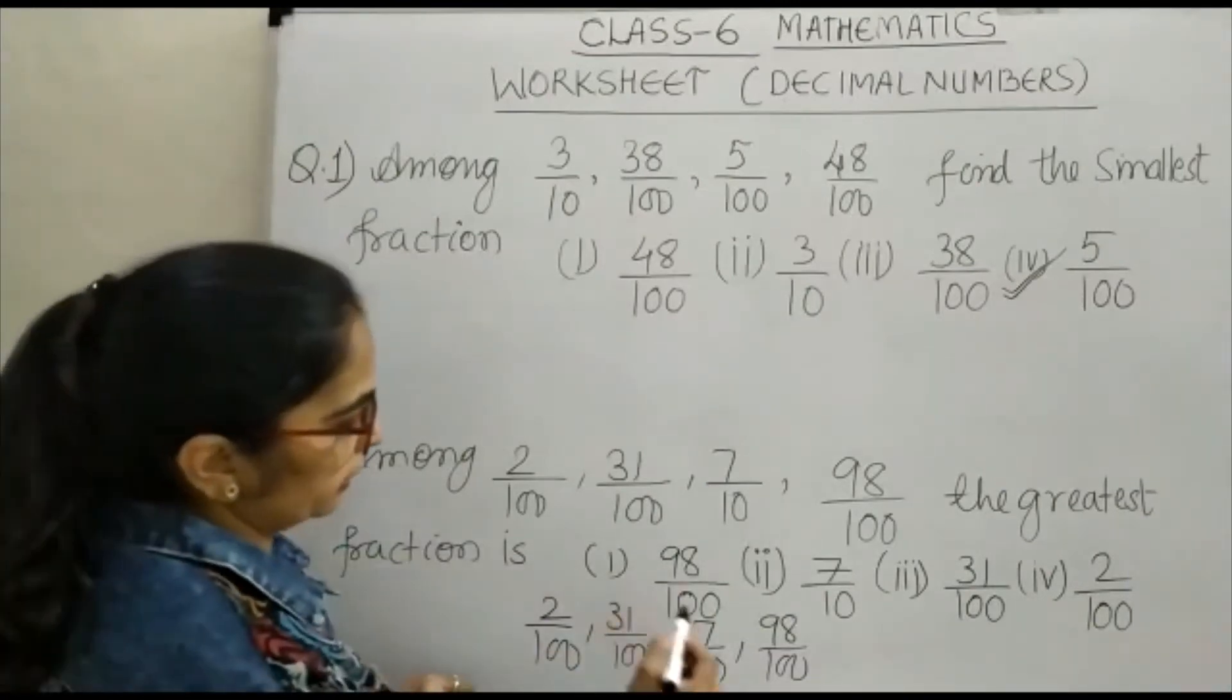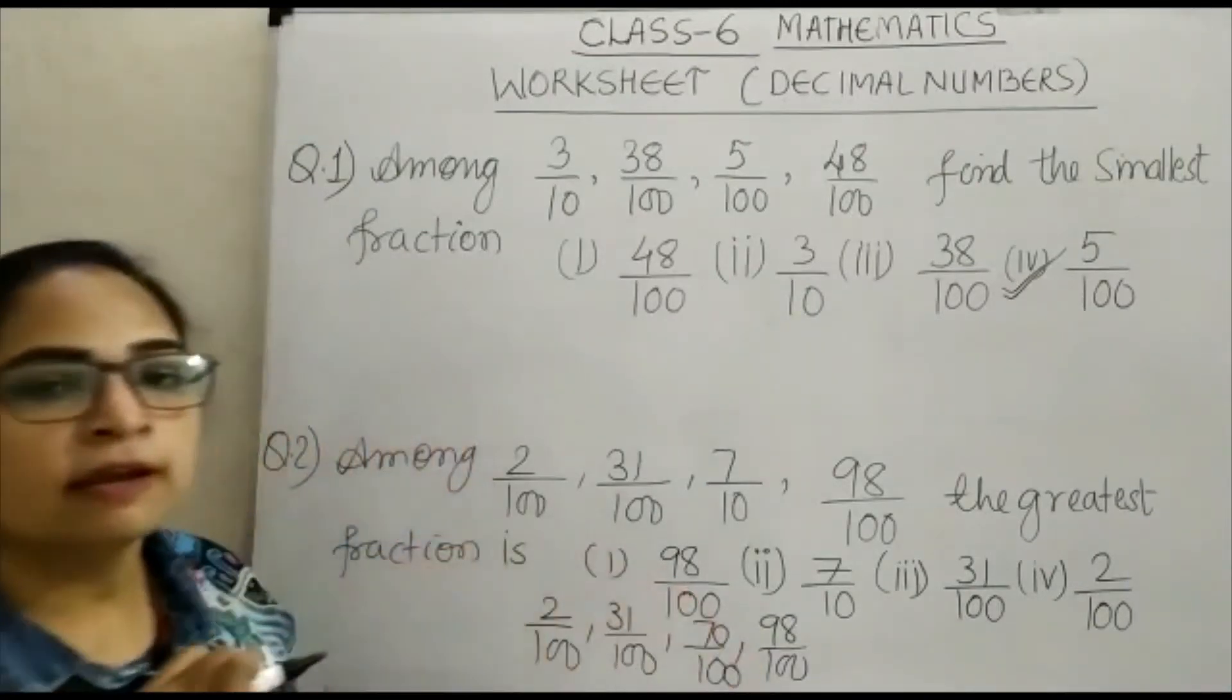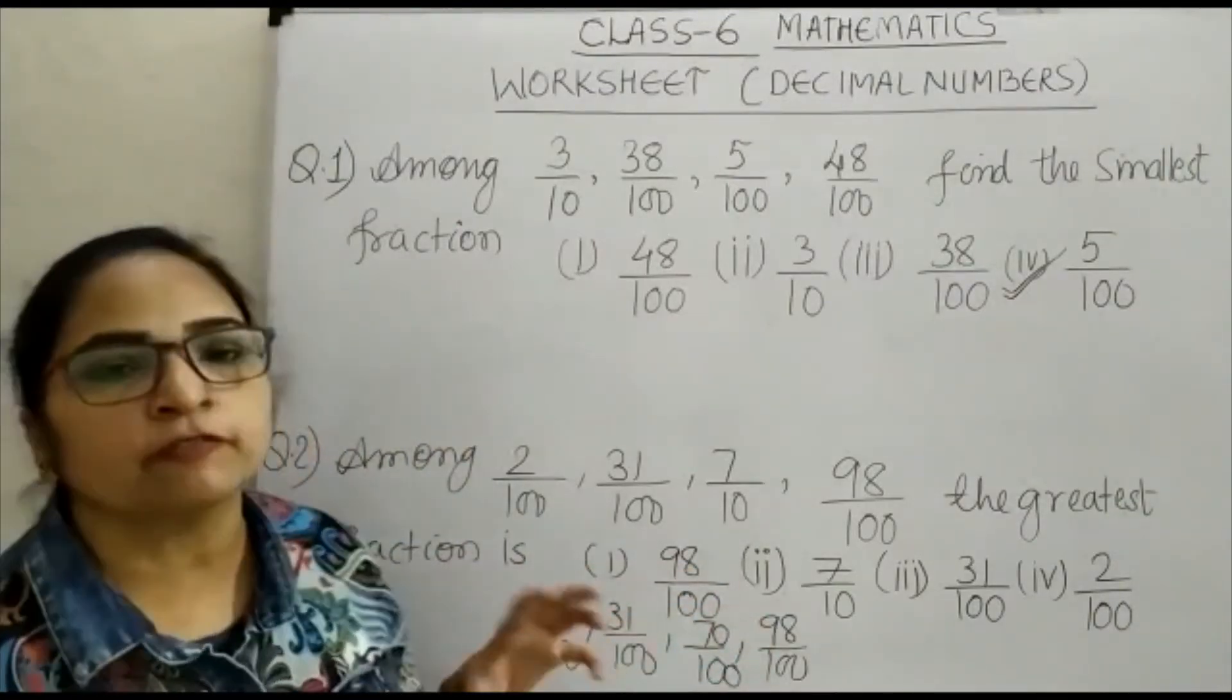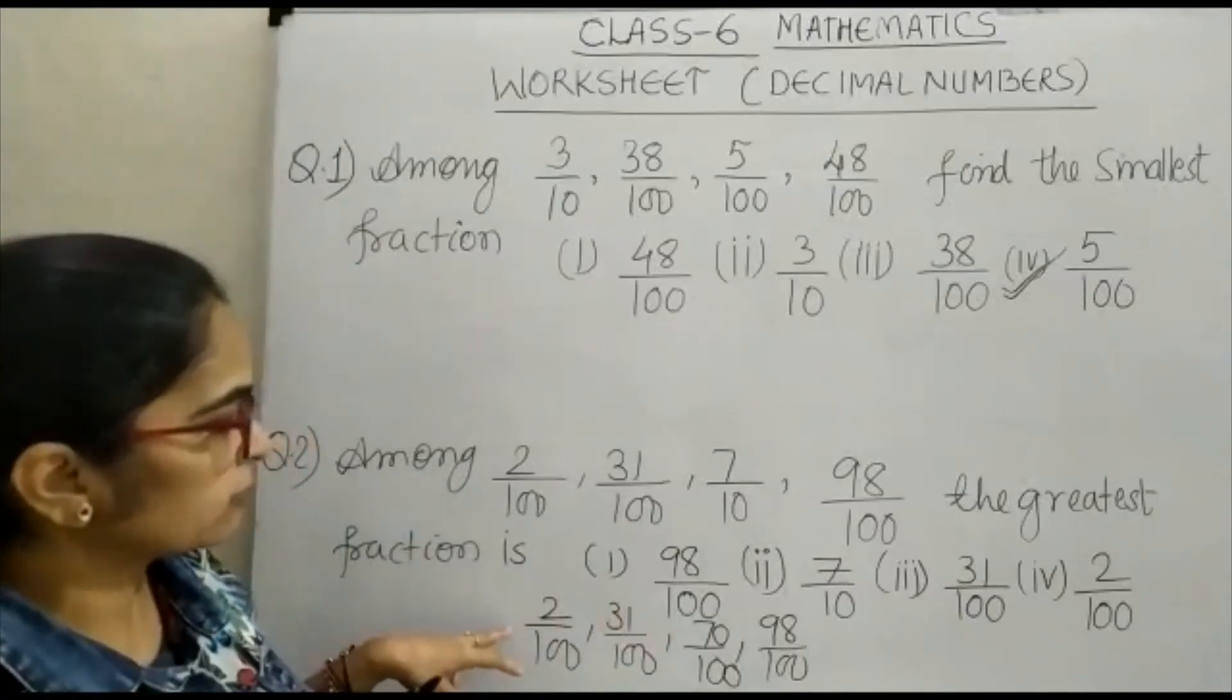So if you multiply by 10, this will be 70. Now in four numerators, out of four numerators, you have to check which one is the greatest. So which one is the greatest?